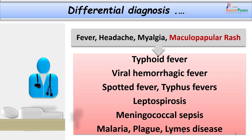These two cases came to us as pyrexia of unknown origin because we could not trace the etiology by routine investigations. In such cases with the appearance of typical rash, high fever and a history of insect bites or infestations, it is important to consider differential diagnoses such as common typhoid fever, meningitis, spotted fever groups, typhus fevers, leptospirosis, meningococcal sepsis, malaria, plague and Lyme disease.